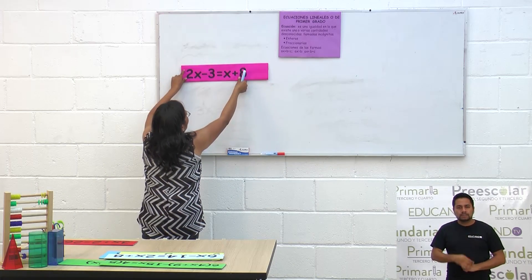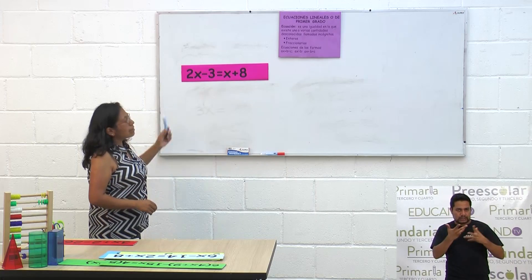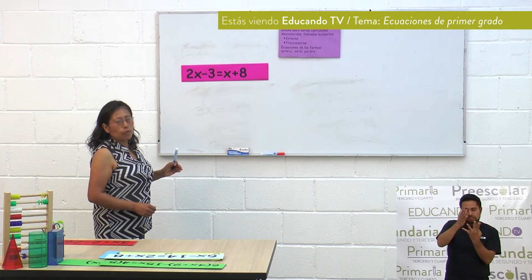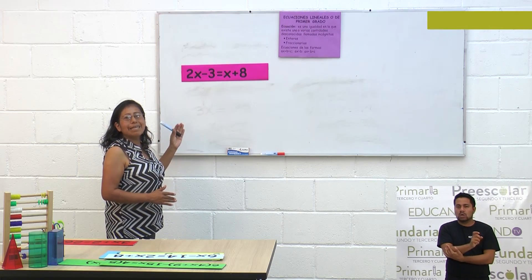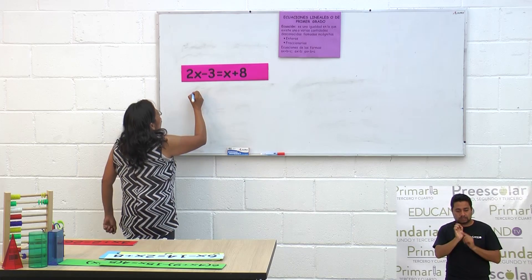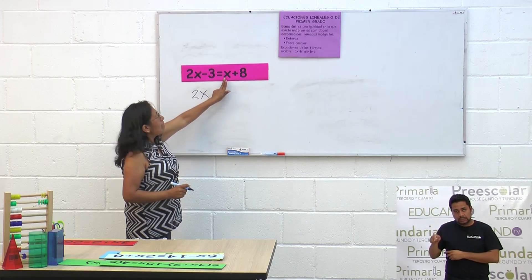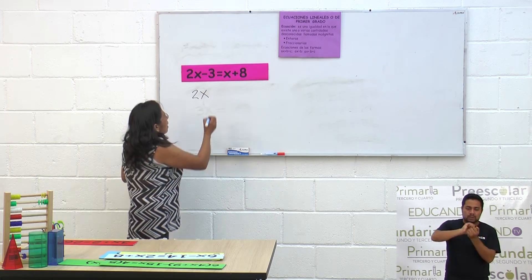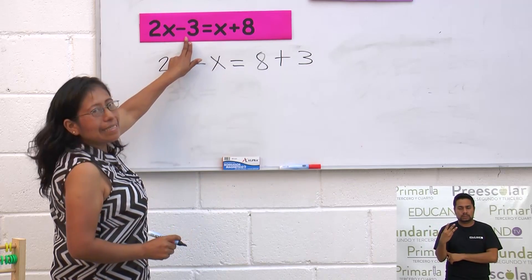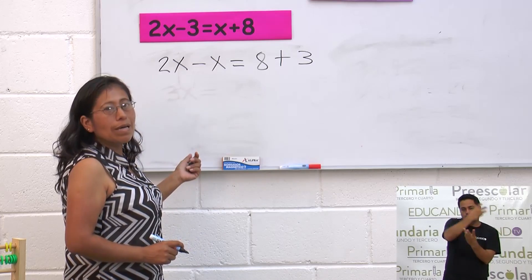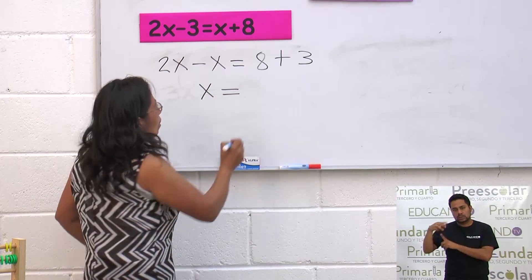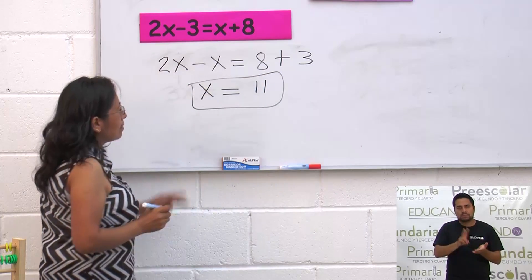Vamos a resolver la otra ecuación: 2x menos 3 igual a x más 8. Aquí tenemos términos en el primer miembro y términos en el segundo miembro. En el primer miembro vamos a dejar los términos que tienen la variable x, y en el segundo miembro los términos independientes, los puros números. Quedaría como 2x; esta x está en el segundo miembro, la pasamos al primer miembro con su inversa, menos x; igual a 8 más 3. Y queda 2x menos x, que es una x, igual a 8 más 3, que es 11. Este es el valor de x: x igual a 11.